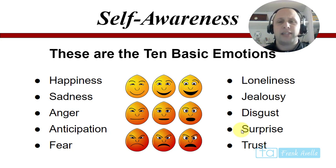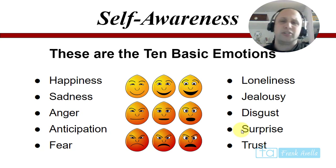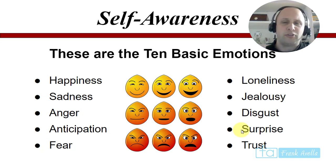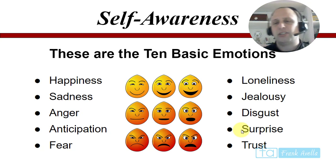These are the ten basic emotions — and there can be eight core emotions depending on the research. Don't focus too much on the exact number. Broadly: happiness, sadness, anger, anticipation, fear, loneliness, jealousy, disgust, surprise, and trust. The smiley face approach used for younger kids is really good in helping them identify their emotions, just like doctors use it.